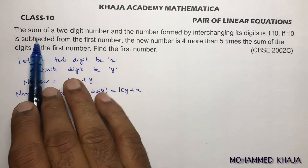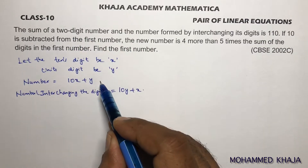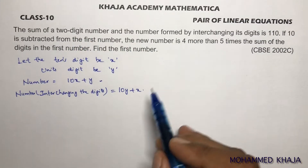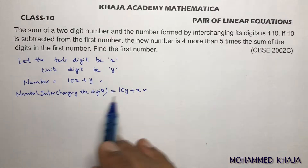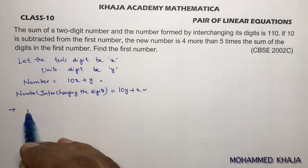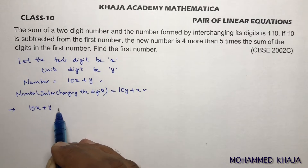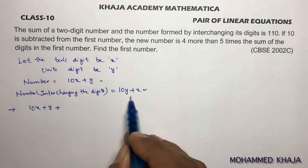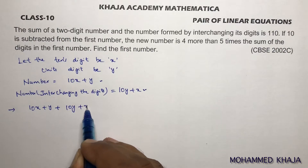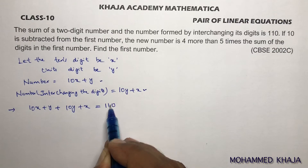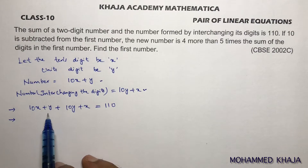Now reading the question: the sum of the two-digit number — which is 10x + y — and the number formed by interchanging the digits — which is 10y + x — equals 110. So the equation is: 10x + y + 10y + x = 110.